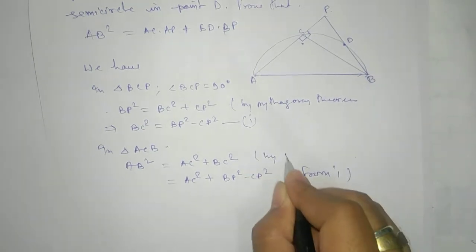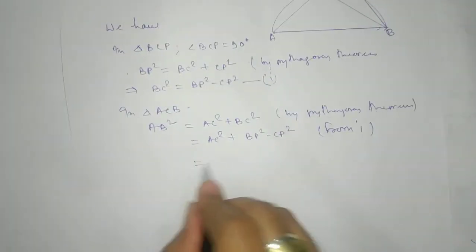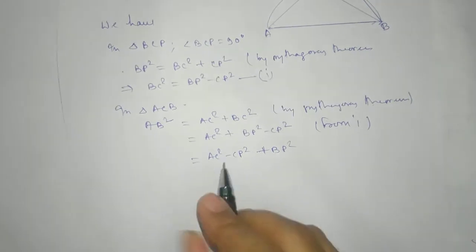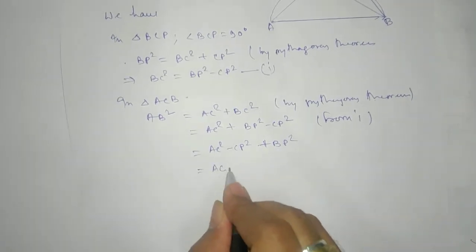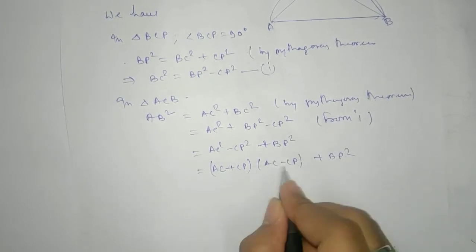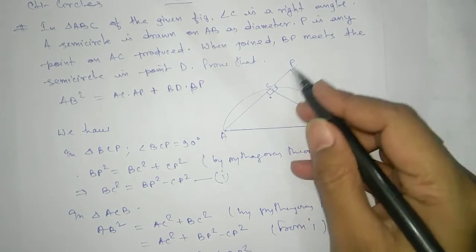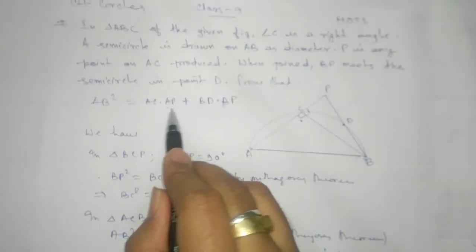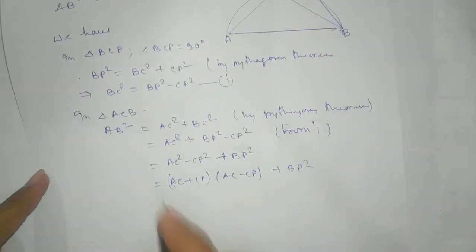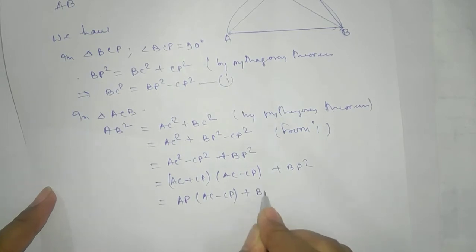Rearranging, we have AB² = AC² − CP² + BP². Now we can factor AC² − CP² using the difference of squares formula as (AC + CP)(AC − CP). The reason for this factoring is that AC + CP equals AP, which is our target expression.